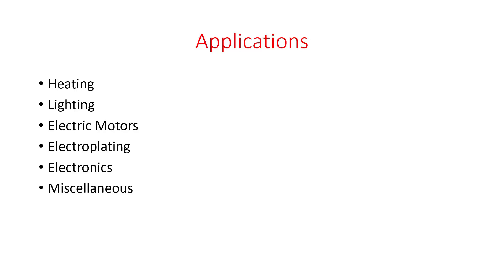Third is electric motors. A main application of electricity is its use for running electric motors. In all electrical motors, electrical energy is converted directly into mechanical energy. Examples of domestic appliances include air dryers, juicers, mixers, refrigerators, ceiling fans, table fans, and washing machines. In industry, we can see lifts, cranes, concrete mixers, and lathe machines as common examples.